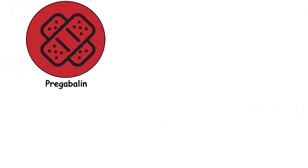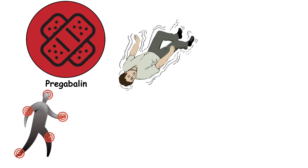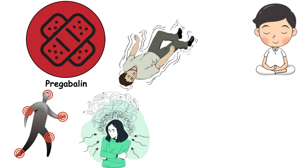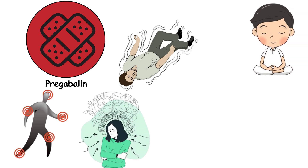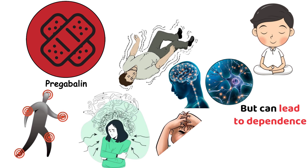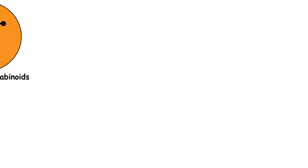Pregabalin is a prescription medication used to treat neuropathic pain, epilepsy, and anxiety disorders. It produces calming effects by modulating neurotransmitter activity in the brain, but can lead to dependence and withdrawal symptoms if misused.